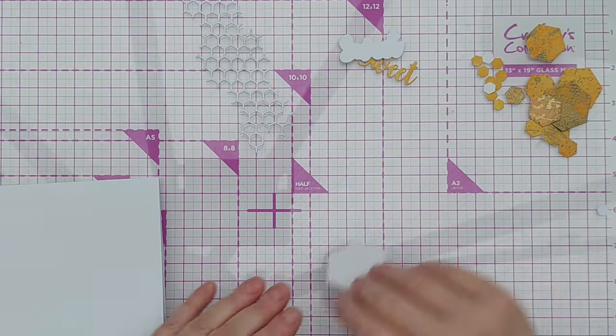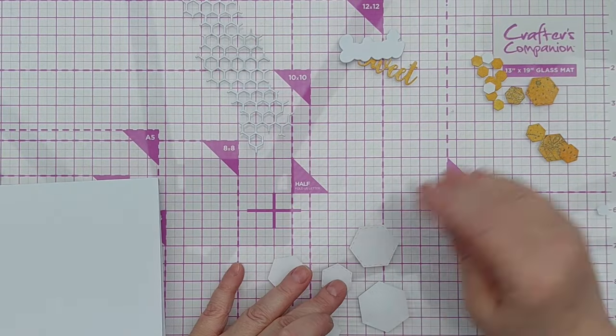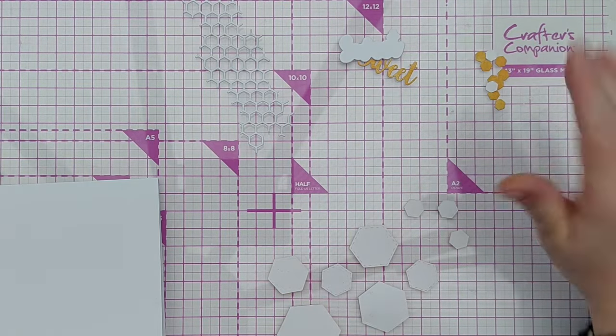Before I start assembling though, I'm going to add some foam tape to the back of these hexagons, just the ones I cut out, not the teeny tiny ones.